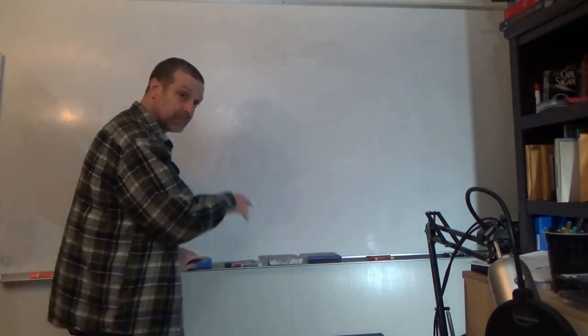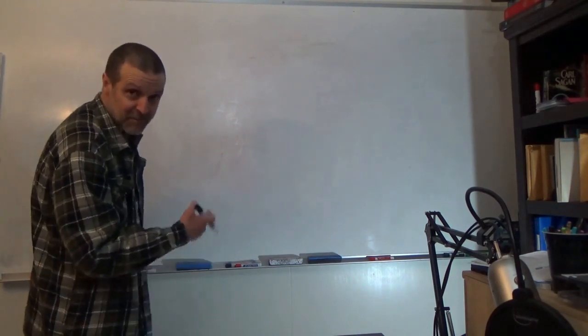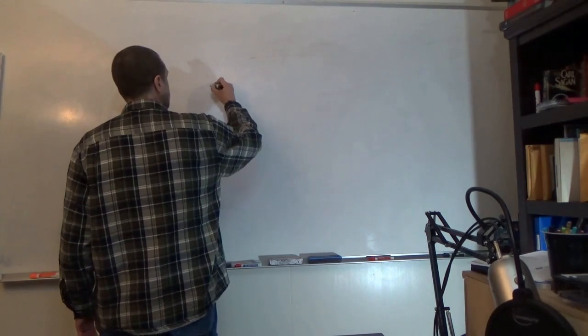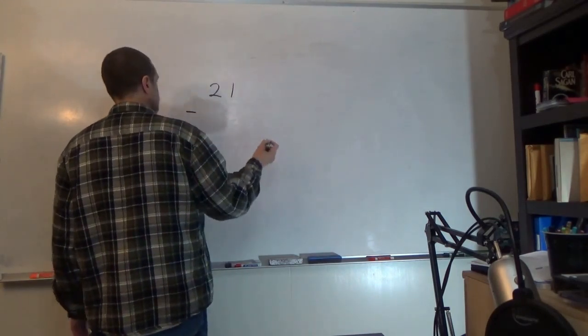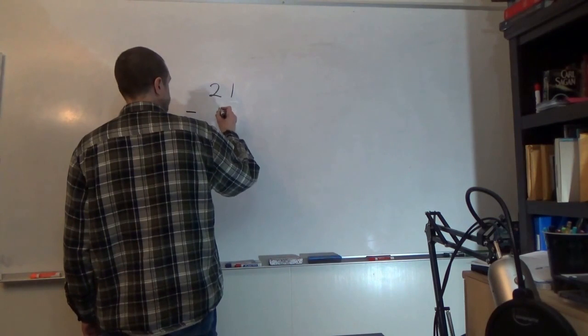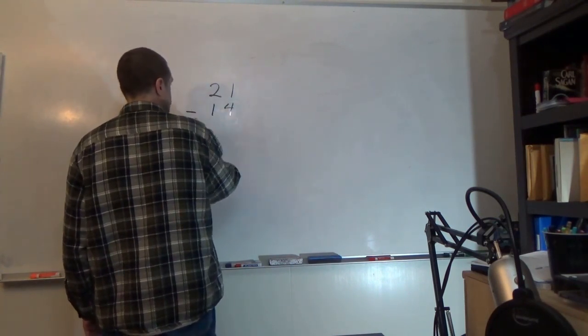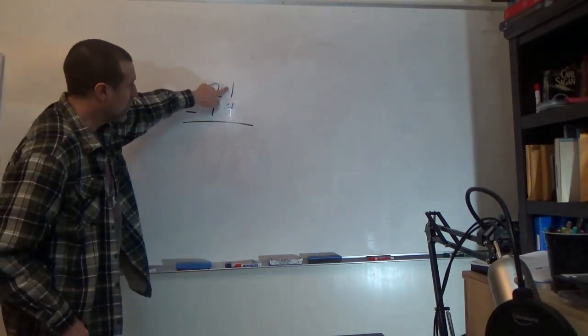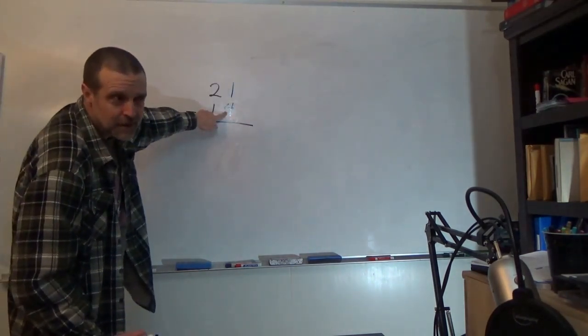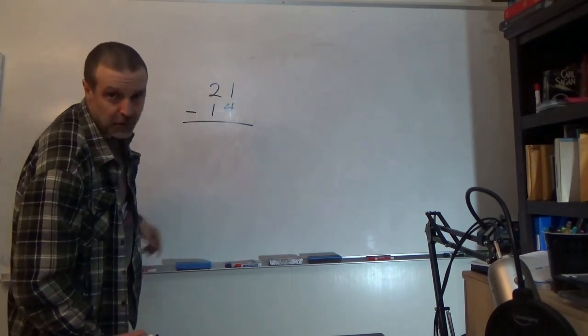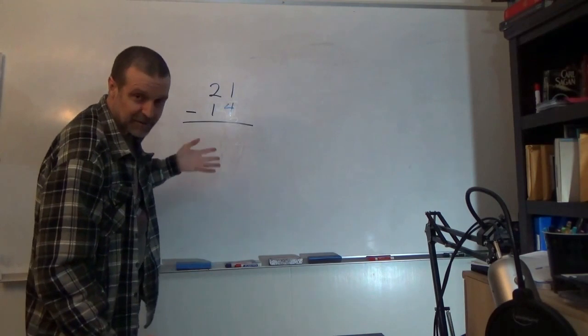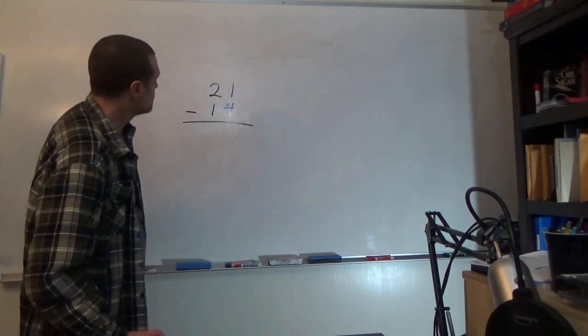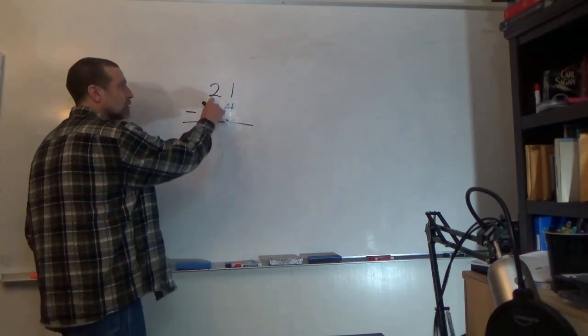Now here's the trick in this method that makes it useful. Let's say that we're taking 21 minus 14. Now one minus four, well one's bigger than four, right? And we're not going to be talking about negatives here. That doesn't make any sense.